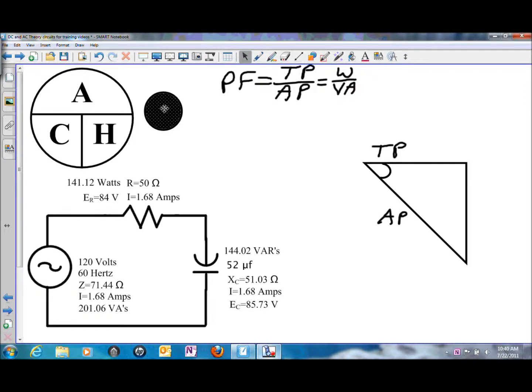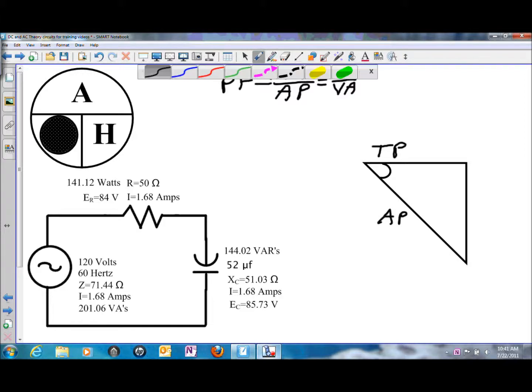Looking at the trigonometric circle, the inverse of cosine to calculate the angle is the ratio of the adjacent side to the hypotenuse. The adjacent side being true power, the hypotenuse being the apparent power. So we can put the numbers in there.